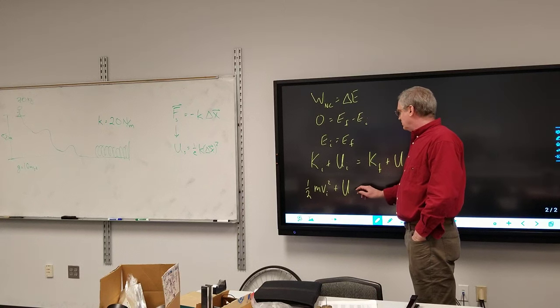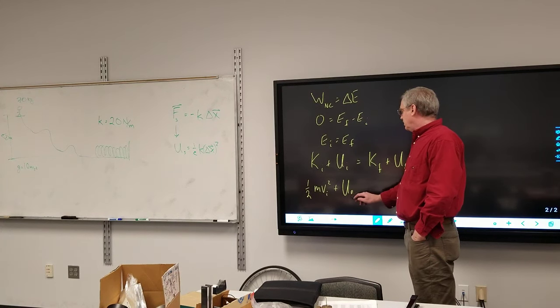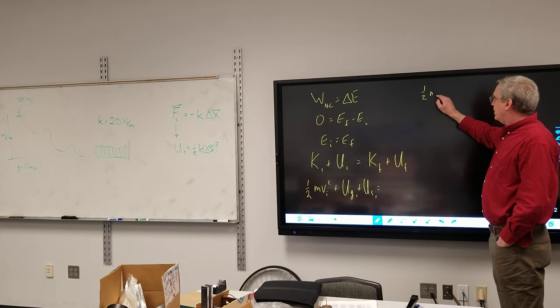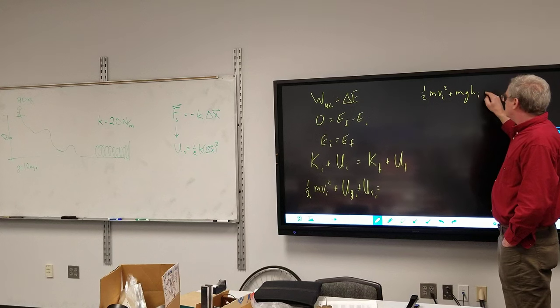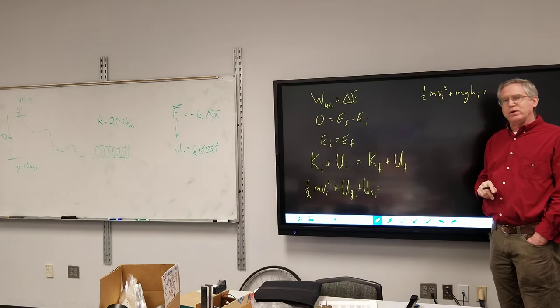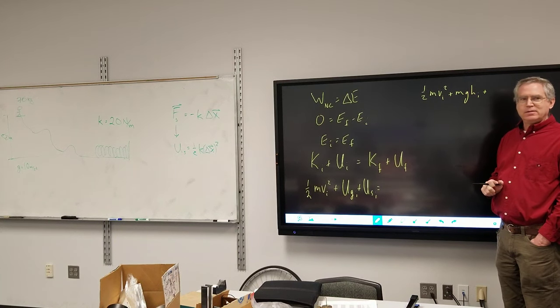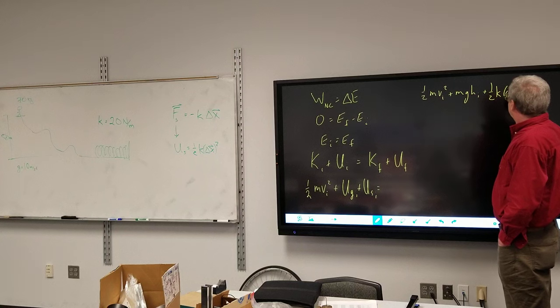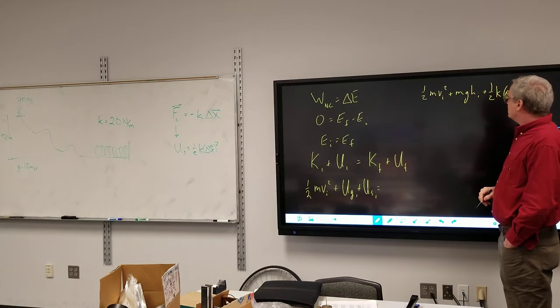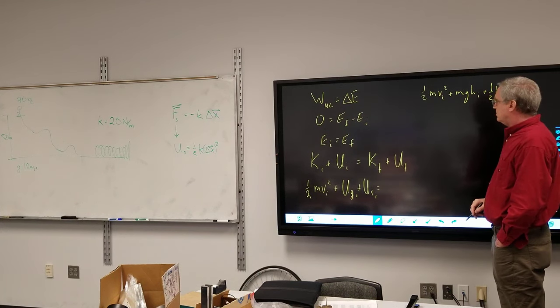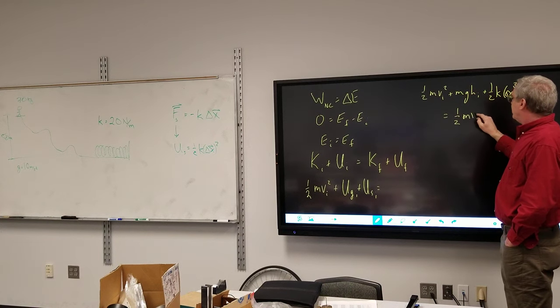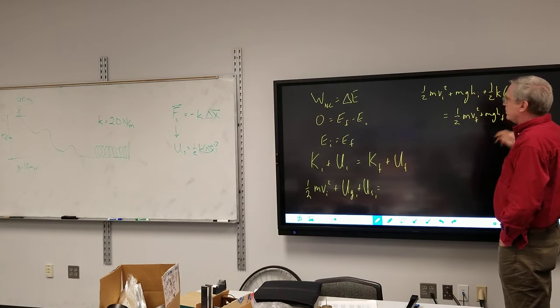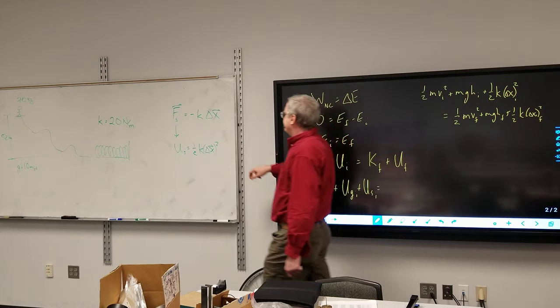So I got, well I put in the intermediate step. Ug plus Us. That's initial. So I got one-half mV initial squared plus mGH initial. Alright. And what about the potential energy formula associated with a spring? An ideal spring. The U sub S equals one half K delta X squared. And that's equal to, and I did not give myself enough room, one half mV final squared plus mGH final plus one half K delta X final.